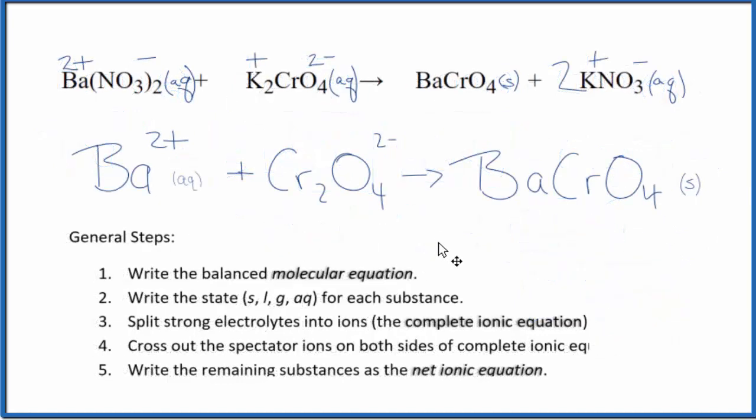And this is the balanced net ionic equation for barium nitrate plus potassium chromate. You'll notice charge is balanced. We have a 2+ here and a 2-. That gives us a net charge of 0. And then we also have a neutral compound in the products, so its charge is 0 as well. Its net charge is 0. So charge is conserved. And the atoms, they're balanced too.